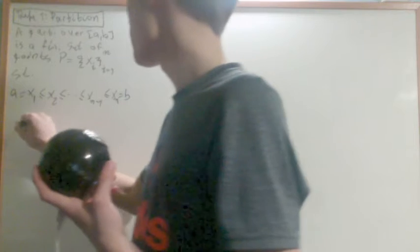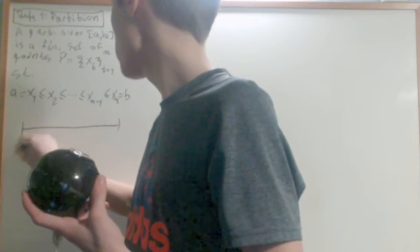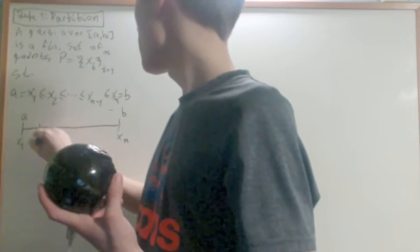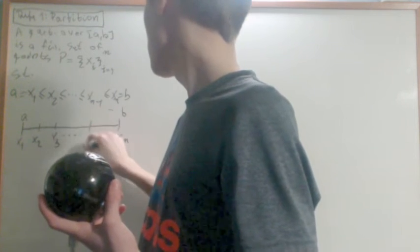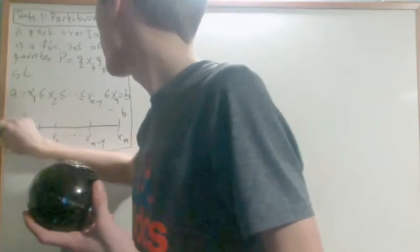So basically meaning that right here we have x1, which is also a, we have xn, which is also b. Right here we have x2, we have x3, xn minus 1 to xn. And that's the partition of the interval. You're just splitting it up into a bunch of little parts.